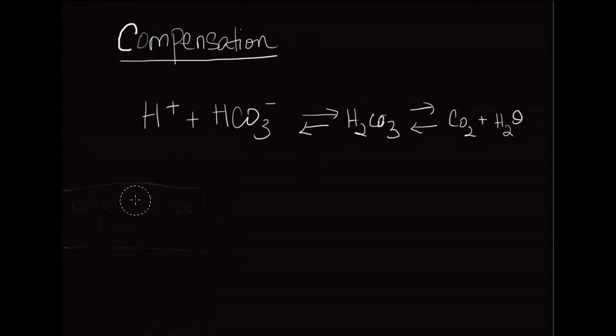In a metabolic acidosis, what generally happens is you have a drop in your serum bicarbonate. What you're trying to determine is how far CO2 falls, because that's what you expect - you expect CO2 to drop.